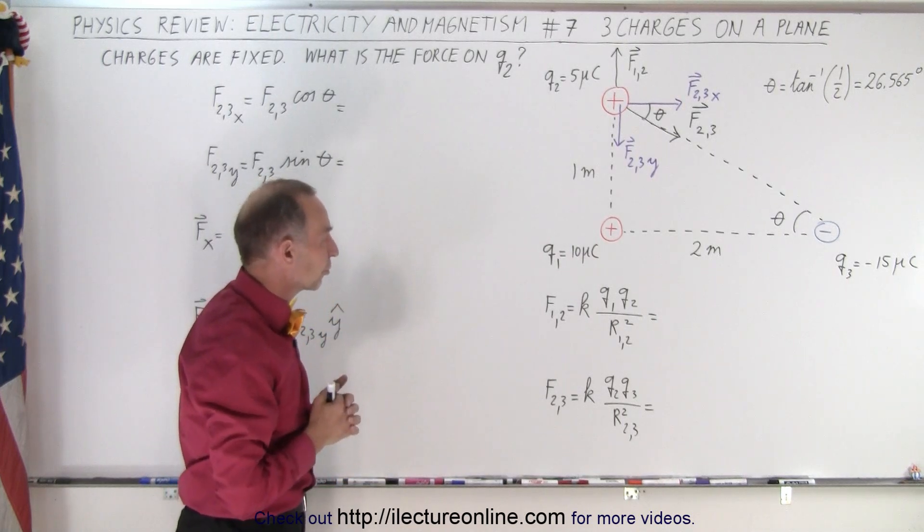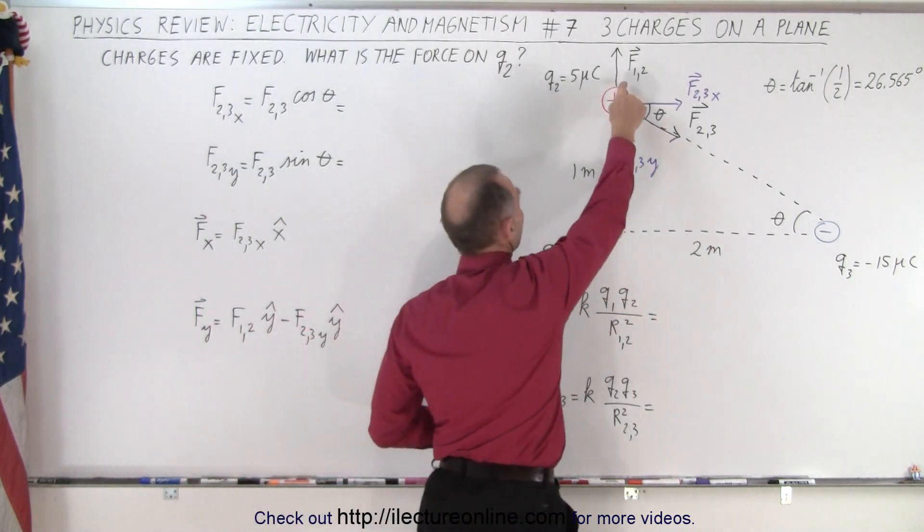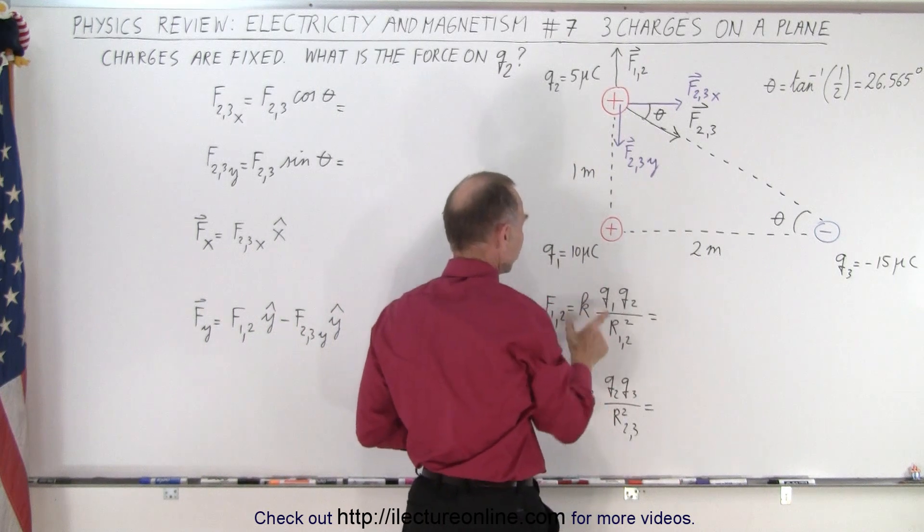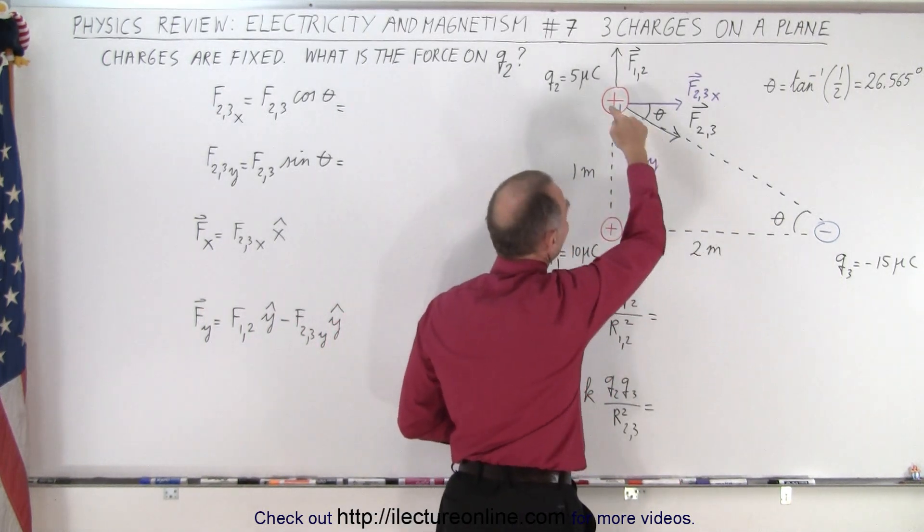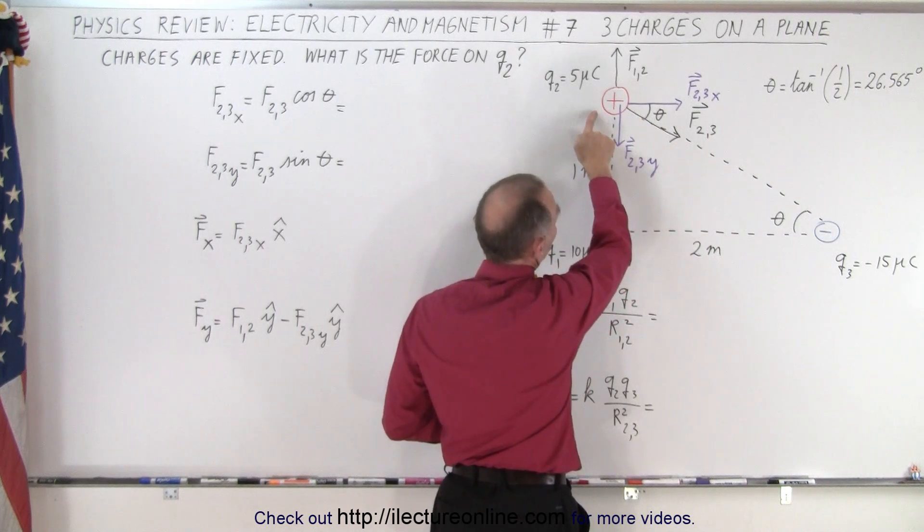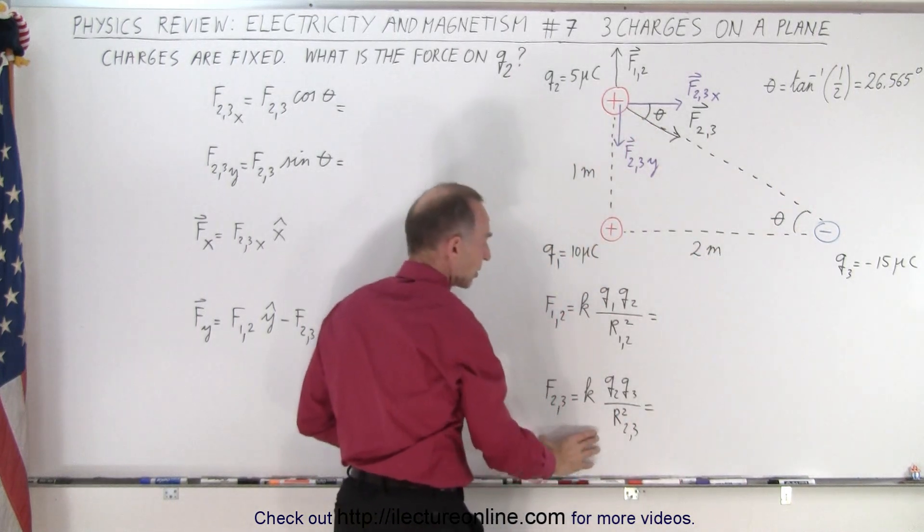We need to find the magnitude of the forces. We want to know what the magnitude is of F12, so we use Coulomb's law there, and we need to know the magnitude of F, the force between 2 and 3, which is right here.